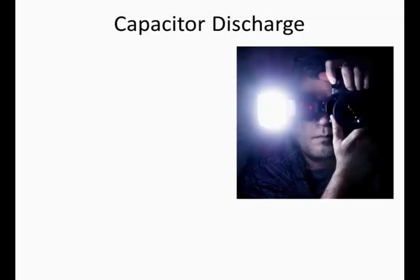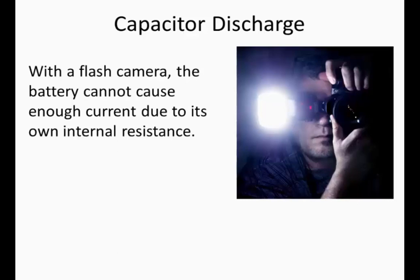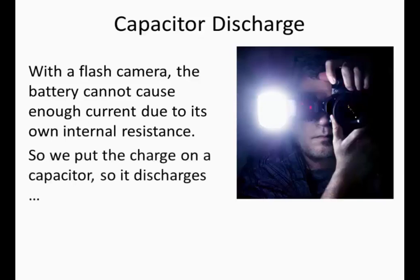Now we're going to look at capacitor discharge. With a flash camera, the battery cannot cause enough current due to its internal resistance, and you need to draw a lot of current to cause a flash. So we have to put the charge on a capacitor so that when it discharges you have a large current, which means it discharges in a flash.